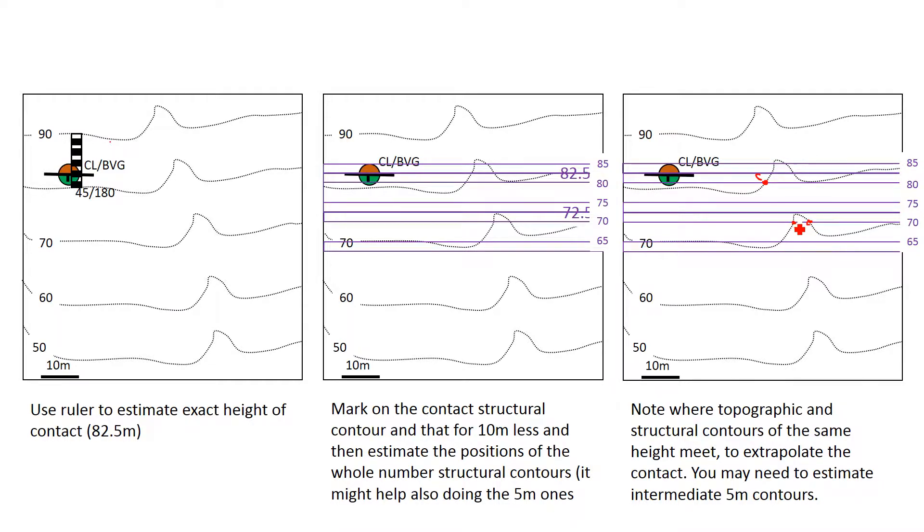And you can see from this we've only got three points now. The contact has to go through this one here as well, so that's where we know it is, it's not really helping. So what it might be useful to do is to estimate in between the topographic contours where the every five meter. So now we can start to put on some more points here.